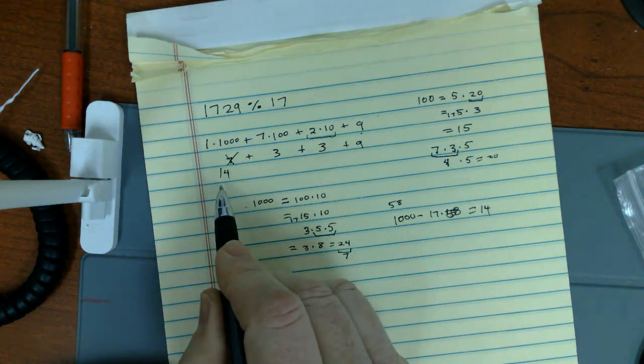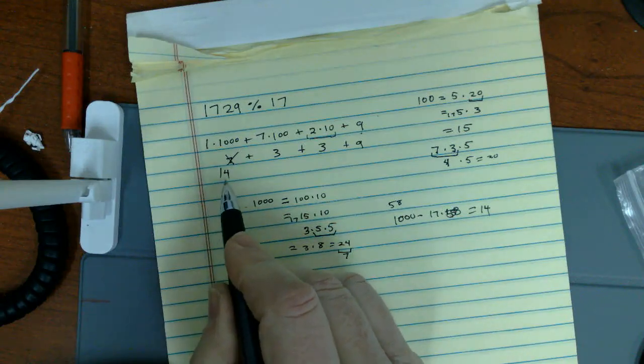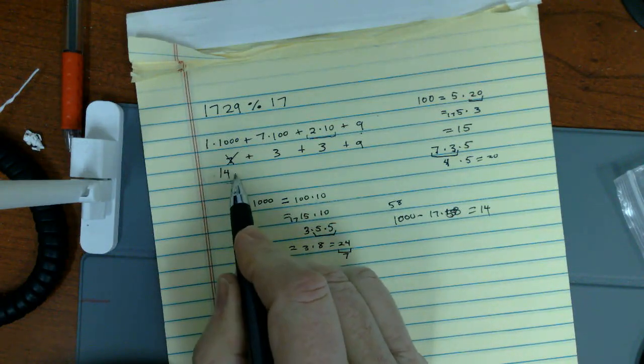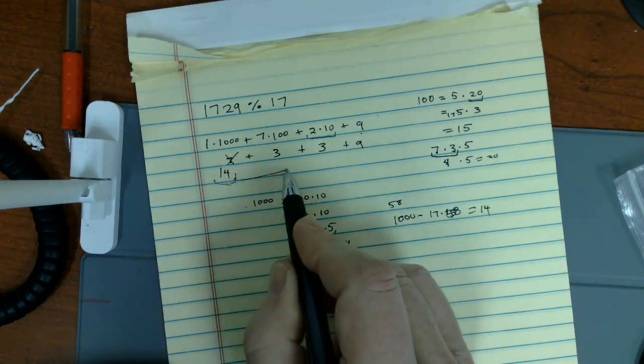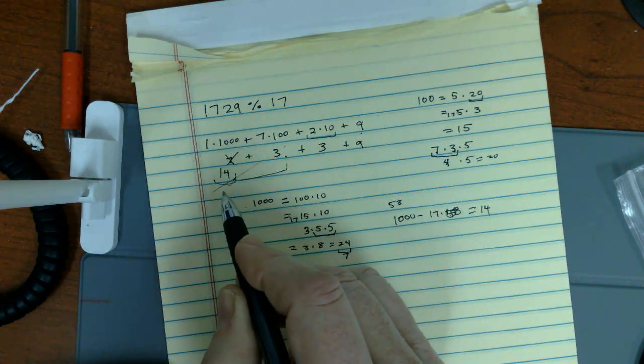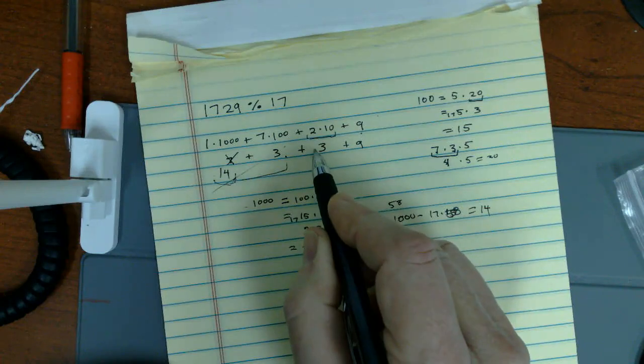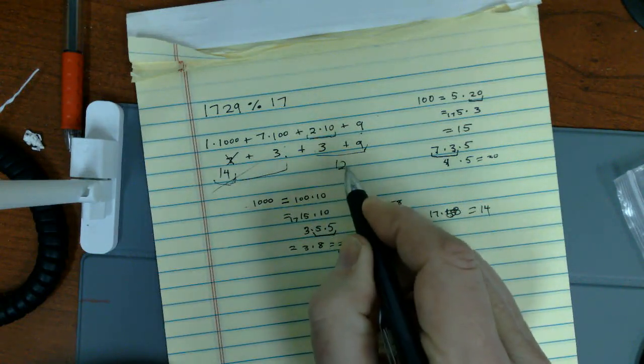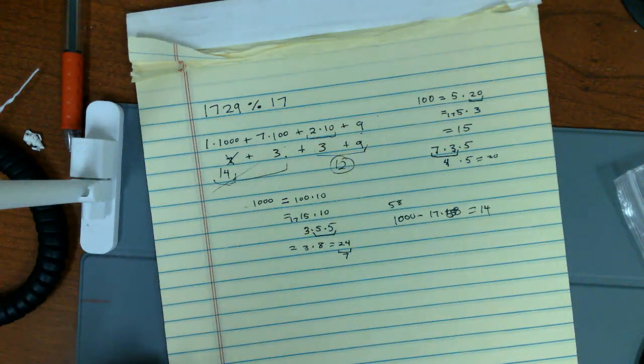So now let me look at this. 14 plus 3 is 17. So I can, which is equal to 0 mod 17. And so this is 12.